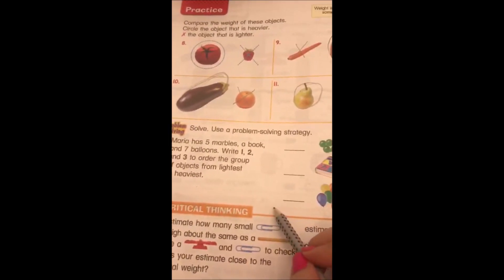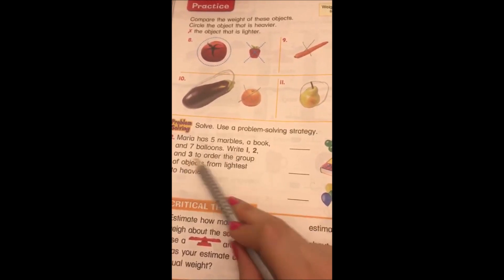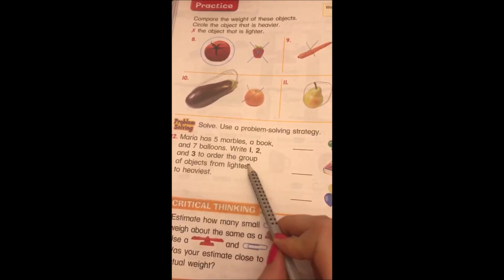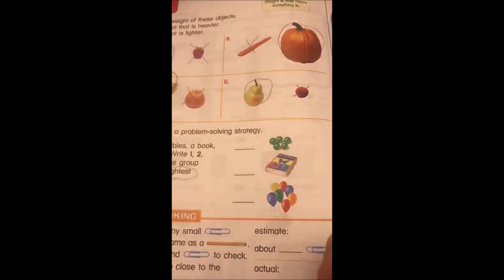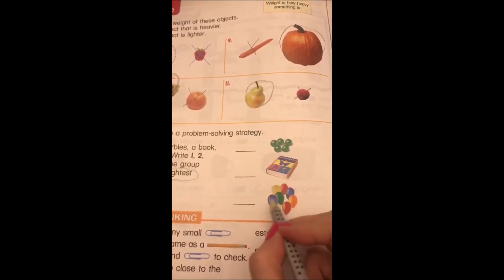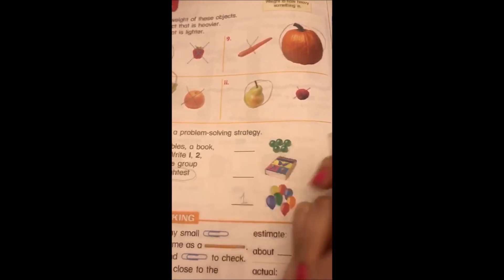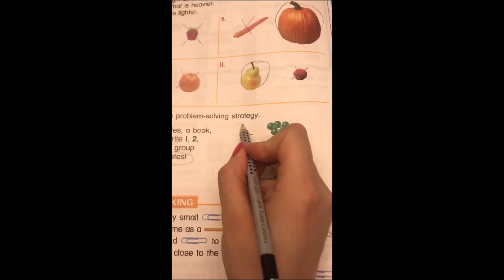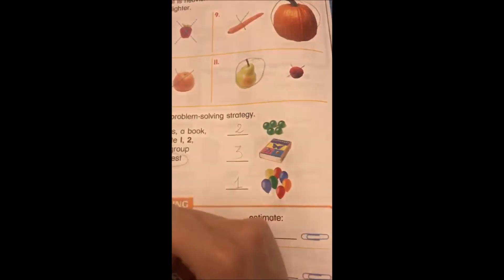Here they said Maria has five marbles, a book, and seven balloons. Write one, two, and three to order the group of objects from the lightest to the heaviest. What do you think is the lightest? Basically, I'm going to choose the balloons because the balloons are very light. They contain only air inside, so it's going to be number one. The marbles are going to be number two, and the dictionary is very heavy, so they're going to be our number three. Thank you so much, grade one, for watching. Goodbye.